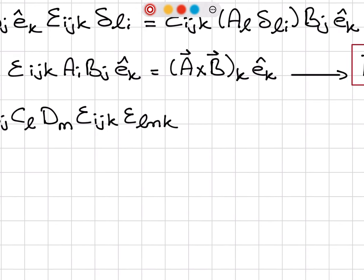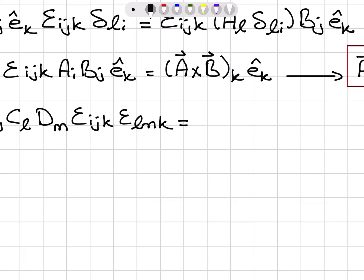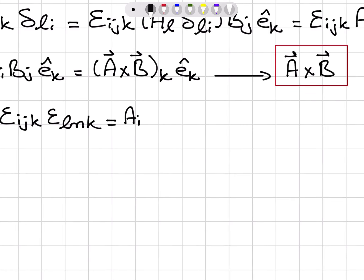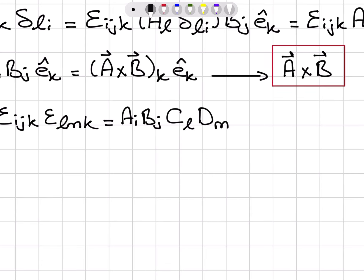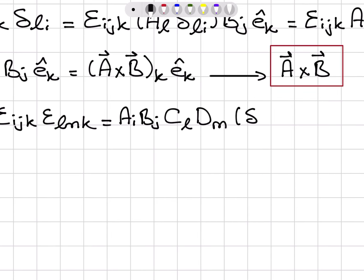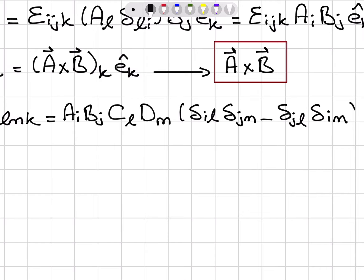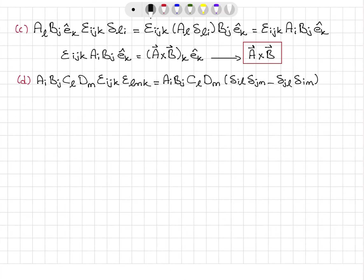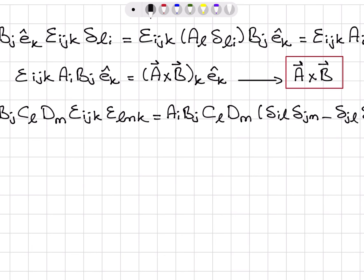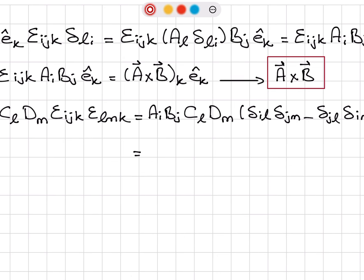Part D: A_i B_j C_l D_m ε_ijk ε_lmk. We have the product of two Levi-Civita symbols with a common index k in the same last position. That means I can use the Levi-Civita identity — first-first, second-second minus inner-outer Kronecker deltas.